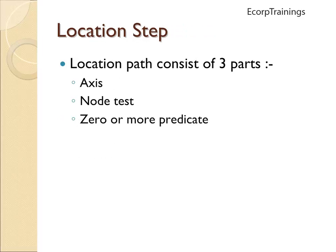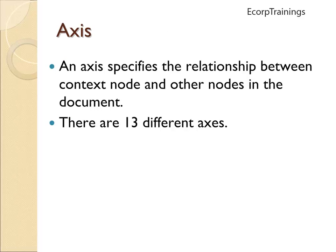Location path consists of three parts: axis, node test, and zero or more predicates. An axis specifies the relationship between the context node and other nodes in the document. There are 13 different axes.